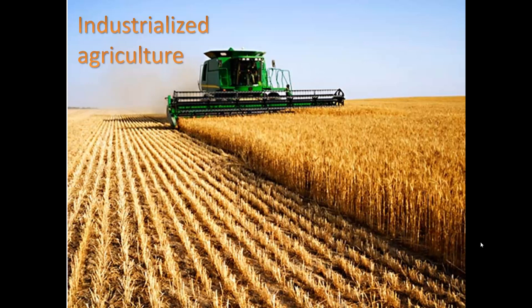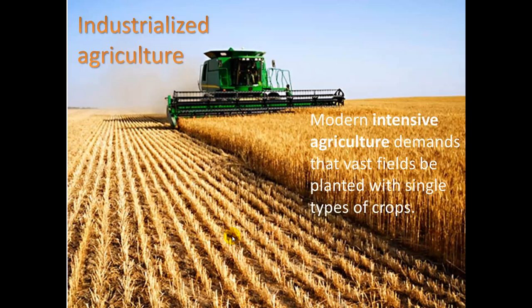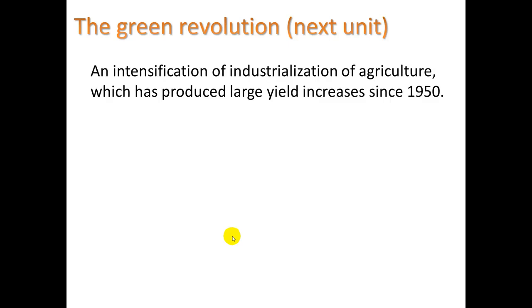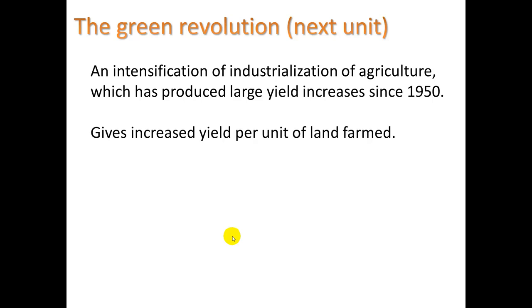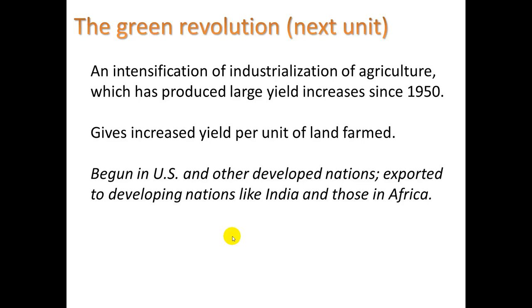This is contrasted with industrialized agriculture, using machines, fossil fuels, and synthetic fertilizers. This is a good example of monoculture — one crop. Modern intensive agriculture demands that vast fields be planted with single types of crops, because there really is no other way to get machinery in. The Green Revolution is an intensification of the industrialization of agriculture, which has produced large yield increases since 1950, giving increased yield per unit of land. It began in the U.S. and other developed nations and was exported to developing nations like India and those in Africa through specialized seeds, equipment, and fertilizers.